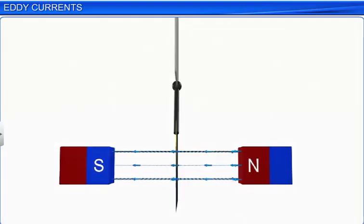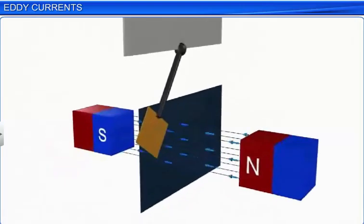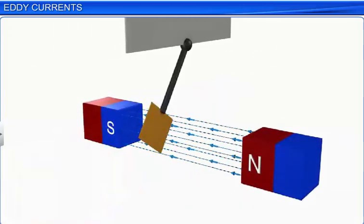As the copper plate enters the field, the changing magnetic flux induces an EMF in the plate, which in turn causes the free electrons in the plate to move, producing circulating eddy currents.